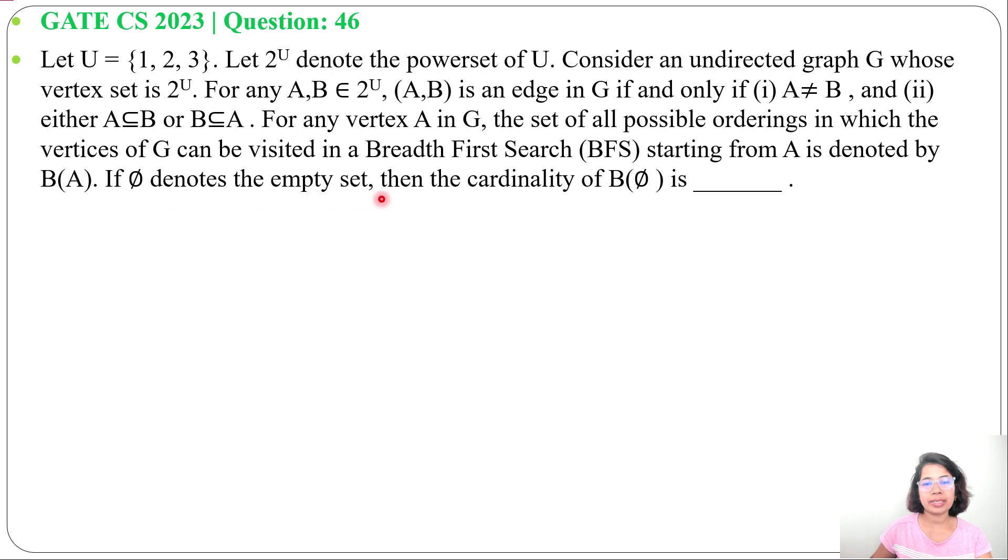If φ denotes the empty set, then the cardinality of B(φ) is blank. The question asks for the number of BFS orderings possible starting from φ.